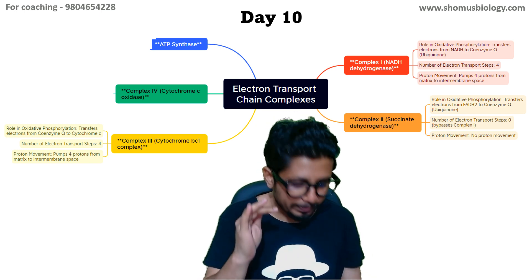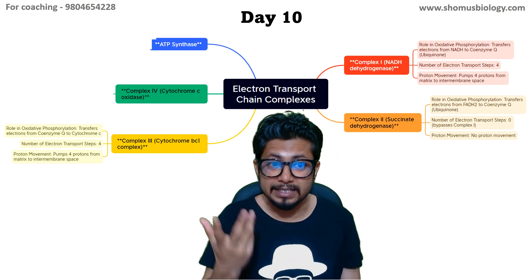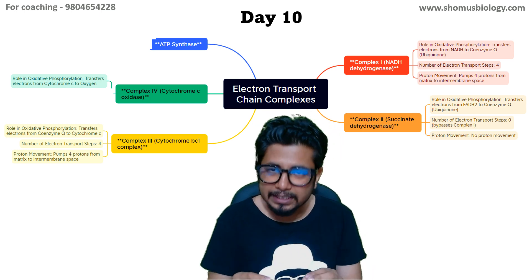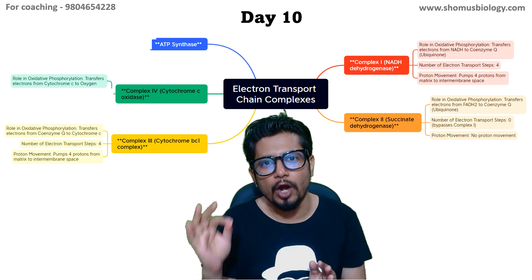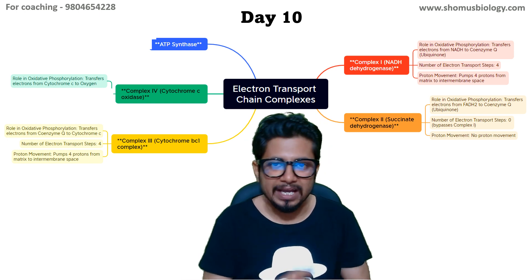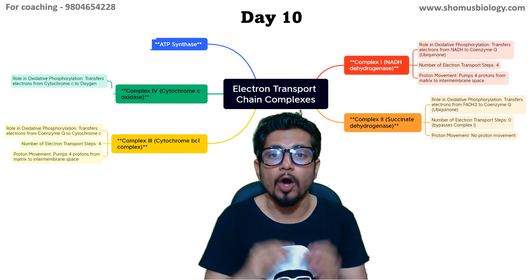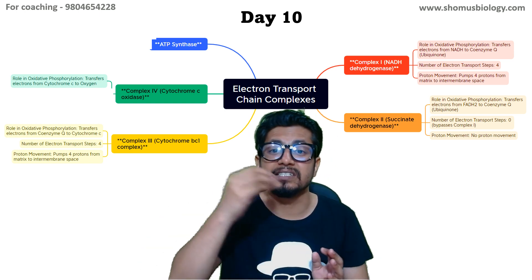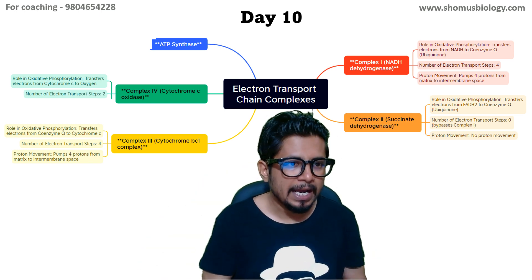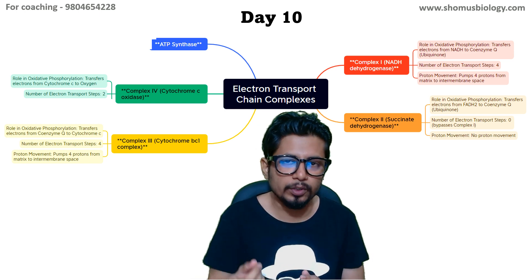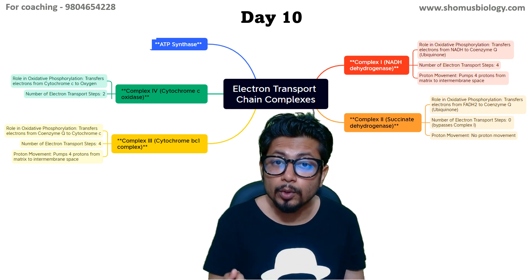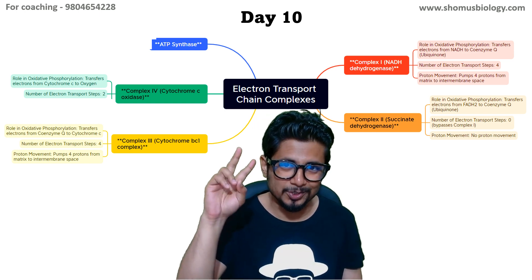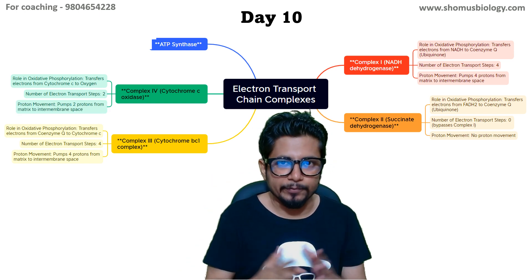The electrons reach their final destination at Complex IV, cytochrome c oxidase. It transfers electrons from cytochrome c to the terminal electron acceptor of the electron transport chain, which is oxygen. Oxygen is reduced to water. The number of electrons transported here is two, and the number of protons pumped from the matrix to the intermembrane space is also two.